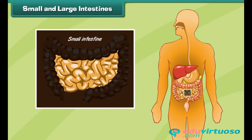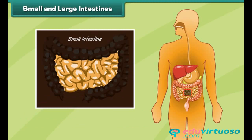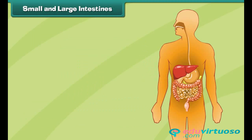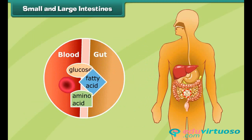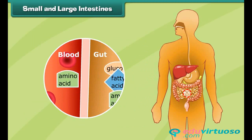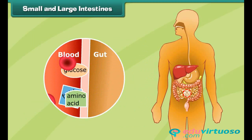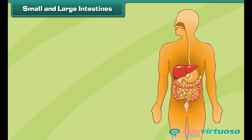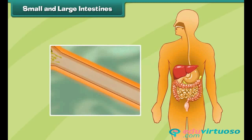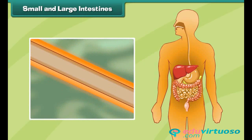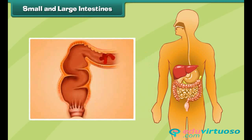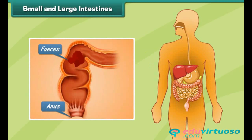The intestines are long tubes where the final breakdown and absorption of food occurs. The small intestine is a long, coiled tube where digested food is broken down completely and absorbed into the blood. The large intestine absorbs water from undigested food and passes waste food out of the body as feces.